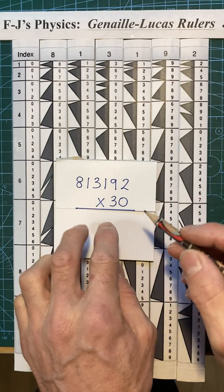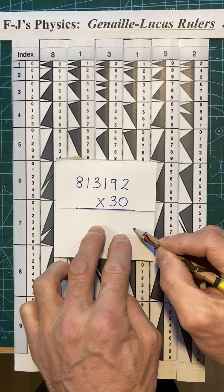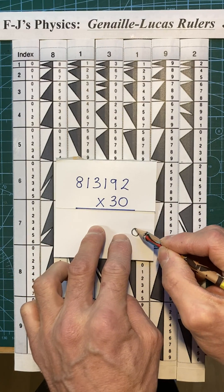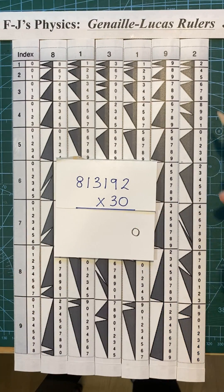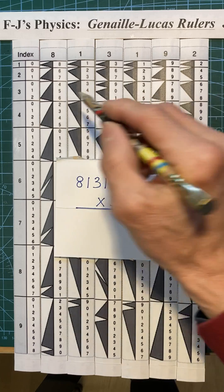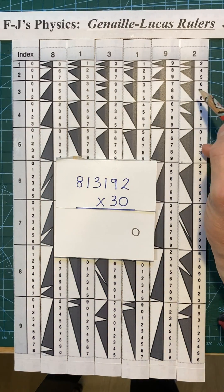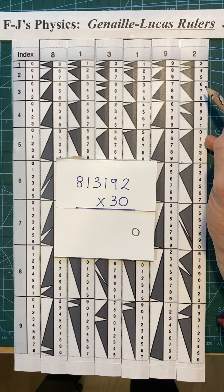So we're going to multiply by 3. We'll put the 0 there already for the 30, and we just go to the row that's 3 and we just read straight off.